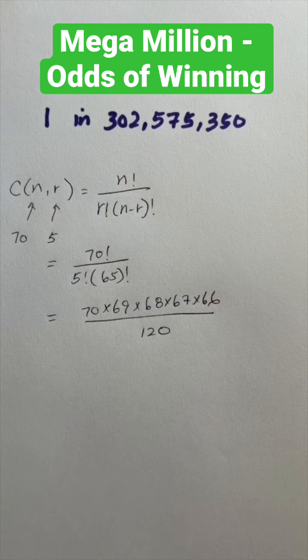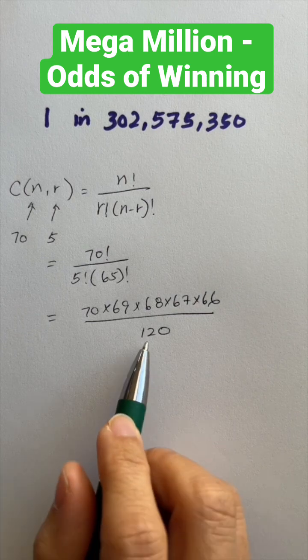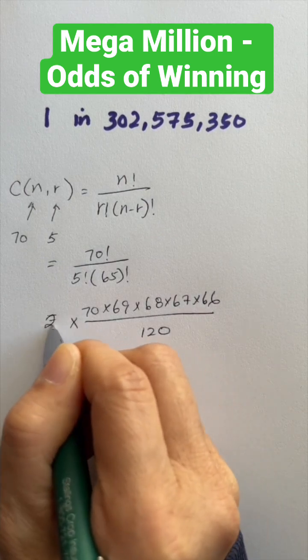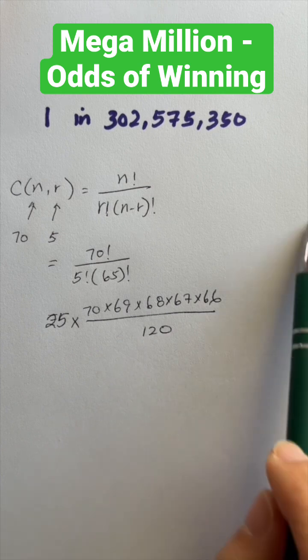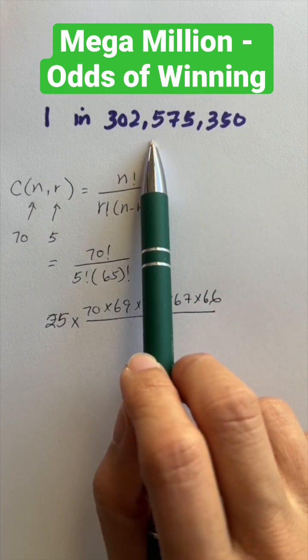Let's not forget that we also have the gold mega ball. And there are 25 combinations. So we need to take this number and multiply it by 25. And this gives you the odds of winning the mega millions.